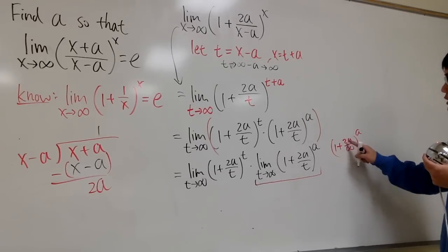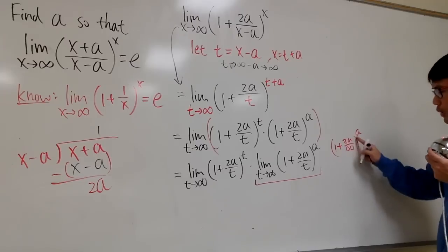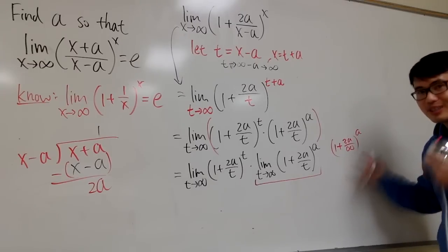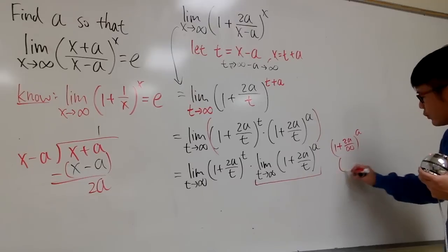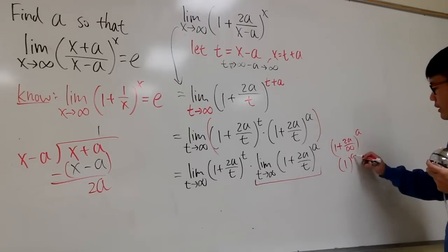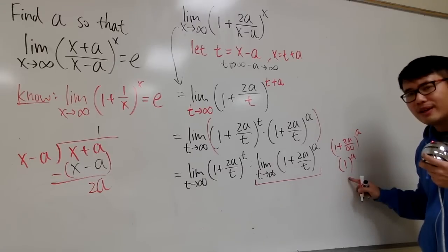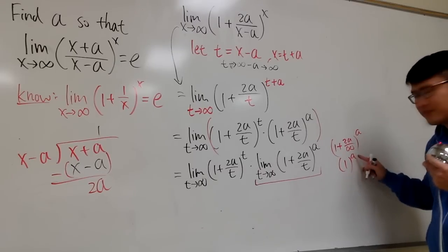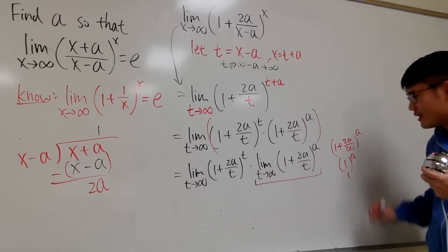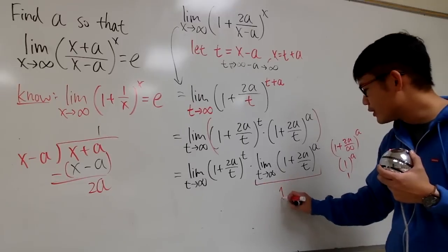So, right here you see 1 plus 2a over infinity. 2a over infinity is just 0. So, in the parentheses, we have 1 to the a power. And 1 to any power, as long as this number is finite, this is just 1.